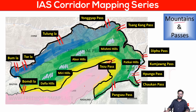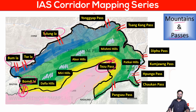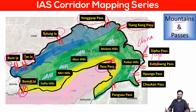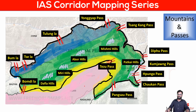Important mountain passes: Bomdi La Pass and Tizu Pass both connect Arunachal Pradesh with Assam. Bumla, Sela, Tulung La, Yangupa Pass, and Senkang Pass connect Tibet with Arunachal Pradesh. Difu Pass is the tri-junction of India, Myanmar, and China. Passes connecting with Myanmar include Kumjang Pass, Kaponga Pass, Chokan Pass, and Pangsau Pass.